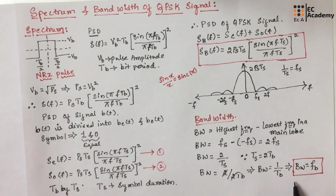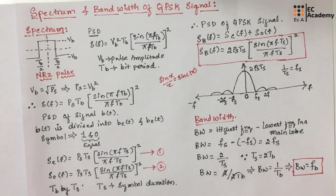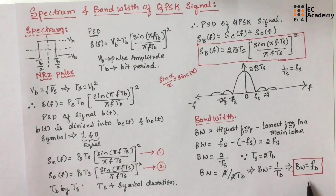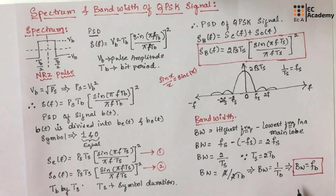If you recall, the bandwidth of BPSK signal was 2FB. The bandwidth of QPSK signal is FB, which is half that of BPSK. The bandwidth is reduced because QPSK considers 2 bits at a time. This is one of the major advantages of QPSK: bandwidth required is reduced by half compared to BPSK, and if bandwidth is reduced, the information transmission rate will also increase.